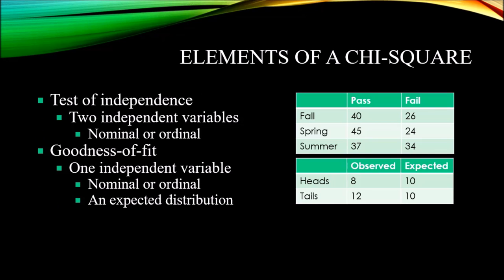Let's take a look at the elements of a chi-square test, dividing this into two types: the test of independence and the goodness of fit. For the test of independence, we need two independent variables, and for a chi-square, these independent variables would be either nominal or ordinal — measured at the nominal or ordinal level of measurement, and most commonly at the nominal.